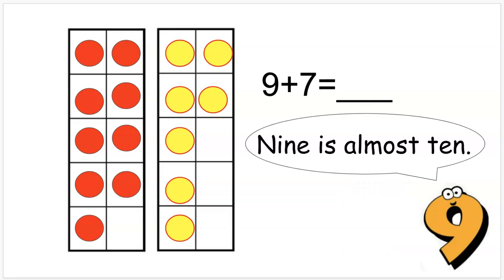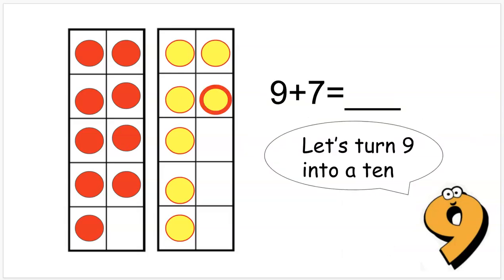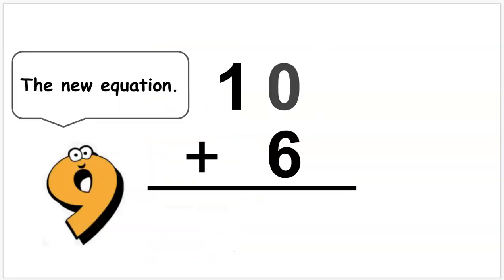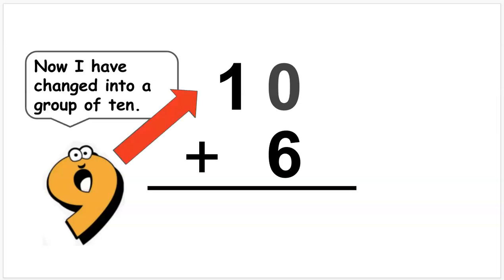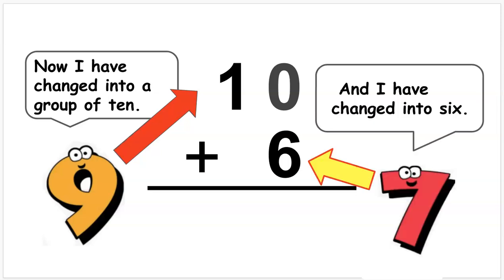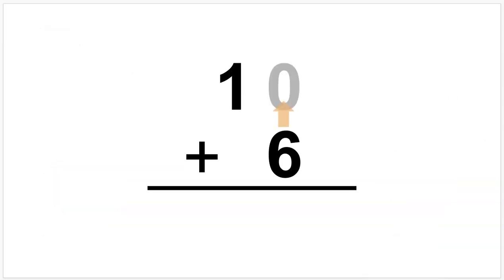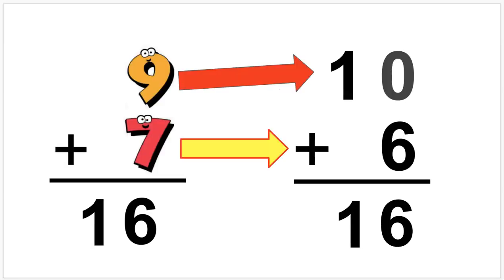Because nine is almost ten, let's turn nine into a ten. The new equation: ten plus six. Now I have changed into a group of ten and I have changed into six. Now disappear the zero. Nine plus seven is the same as ten plus six — they both have a sum of 16.